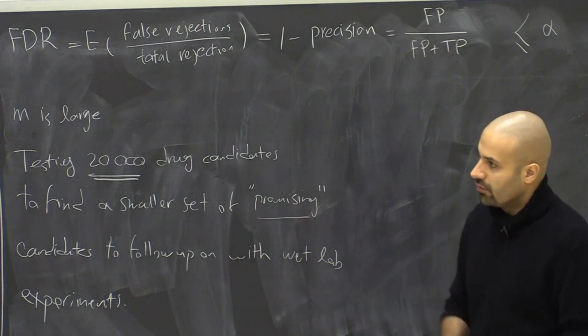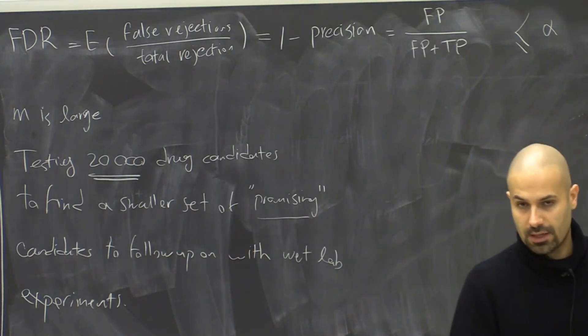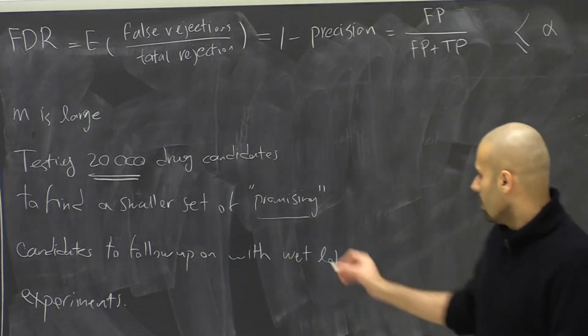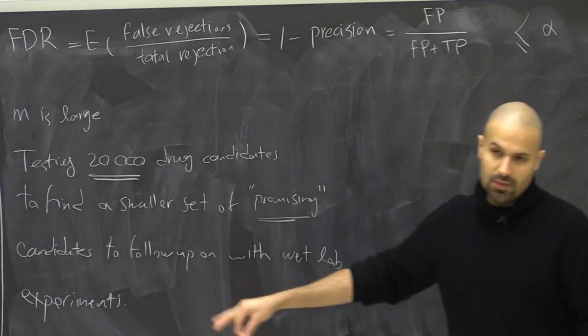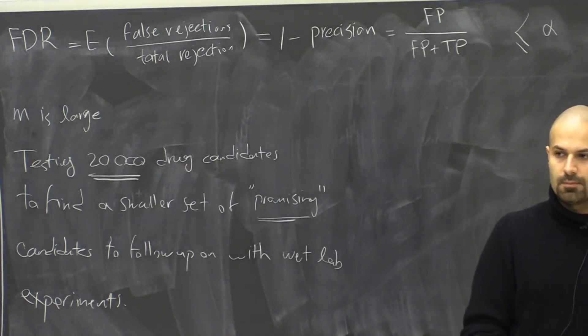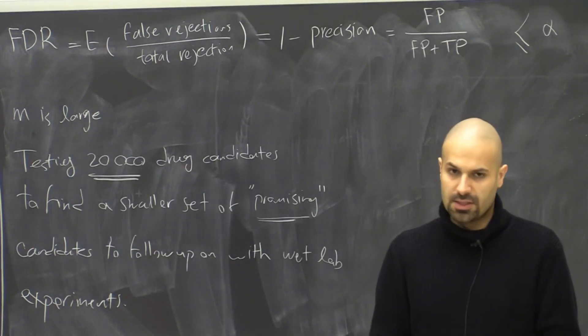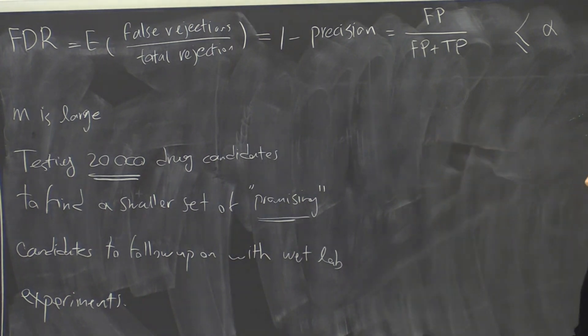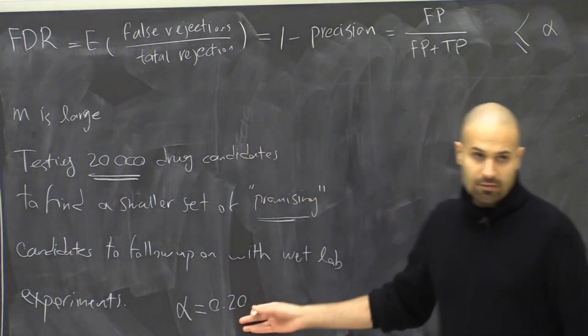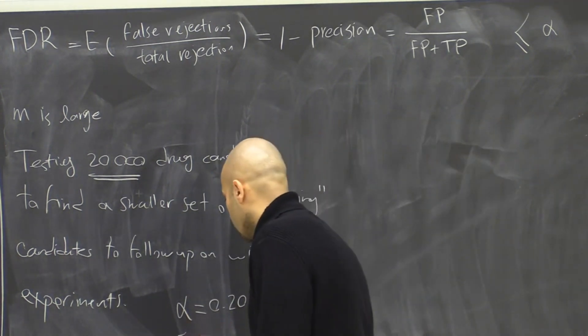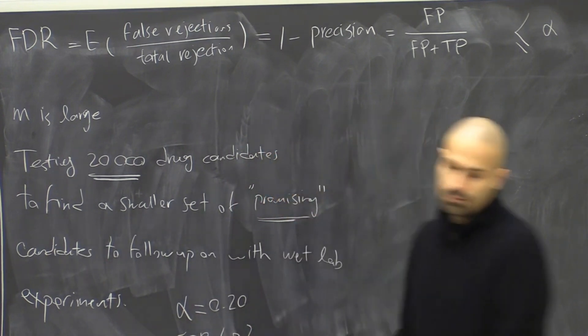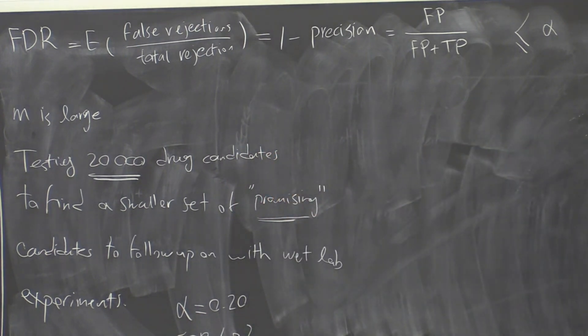So if what we care about is finding some promising set of these drug candidates, then it's not a matter of not making any false discoveries in the screening process. Maybe we are happy with a false discovery rate of 20%. We just want this set of promising candidates that we get from this process, we want 80% of them to be relevant. We tolerate 20% false discovery. In this case, we want some alpha of 20% and we want the false discovery rate to be bounded by alpha.